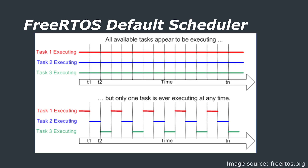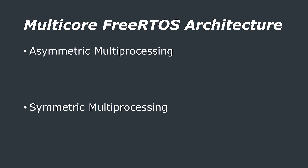Using both cores with FreeRTOS might seem straightforward, but there are many challenges that can crop up if you're not expecting them. Looking back at earlier videos on task scheduling in a single-core environment, tasks are run one at a time but with round-robin time slicing, giving the impression of concurrency. When we look at a multi-core situation, things are fundamentally quite different.